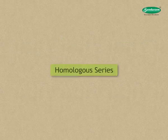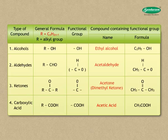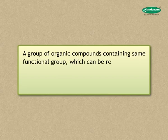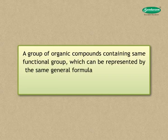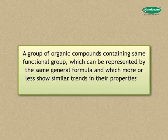Let us study about homologous series. A large number of organic compounds are classified on the basis of the functional group present in them. They are represented by the same general formula, their methods of preparation are similar, and they show similar properties. A group of organic compounds containing the same functional group, which can be represented by the same general formula and which more or less show similar trends in their properties, is known as a homologous series.